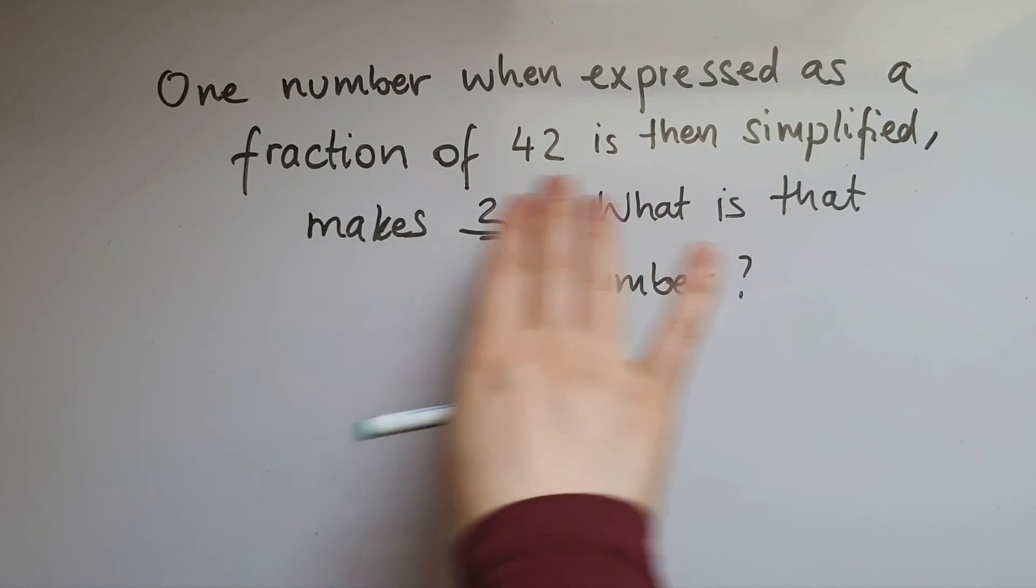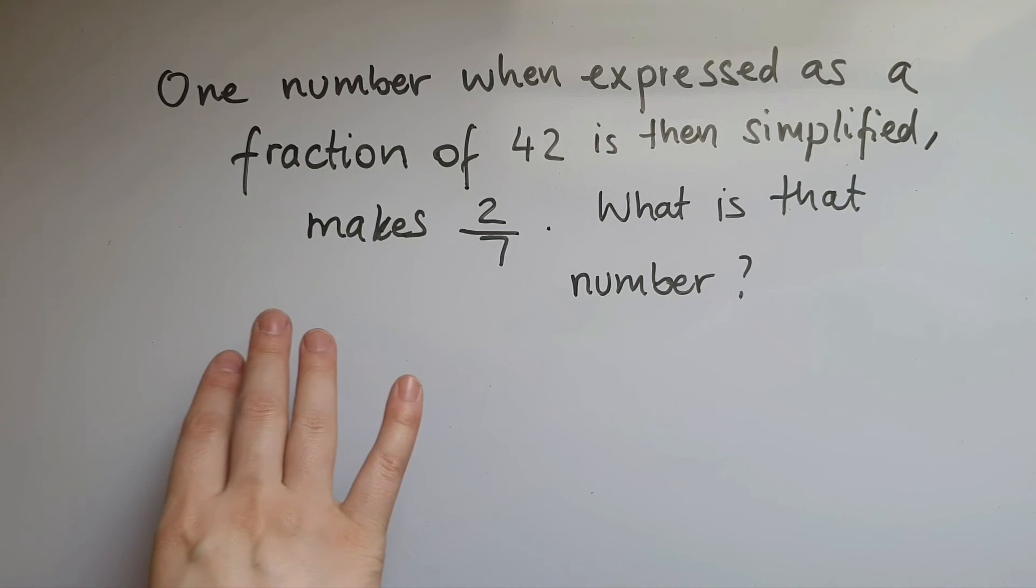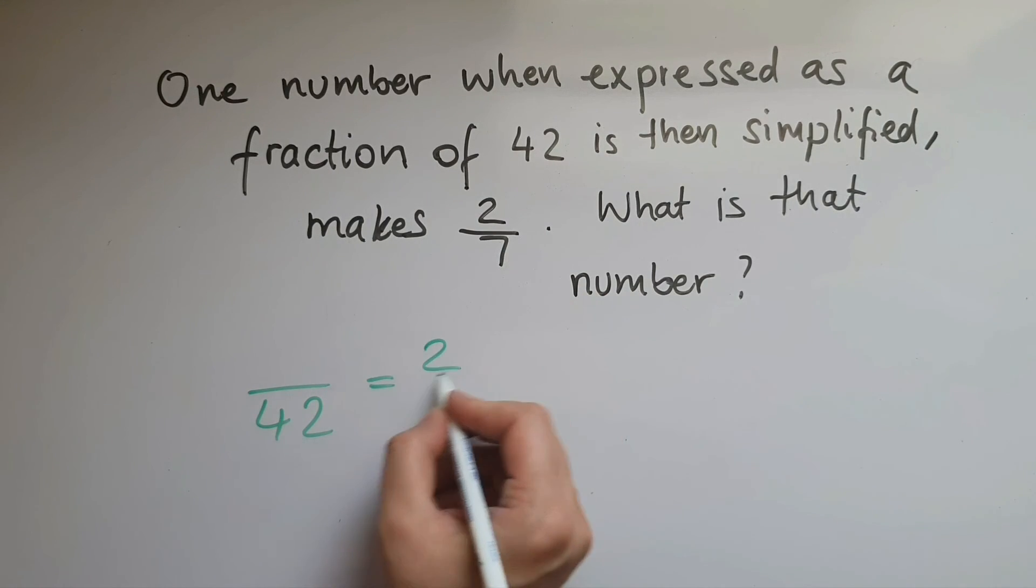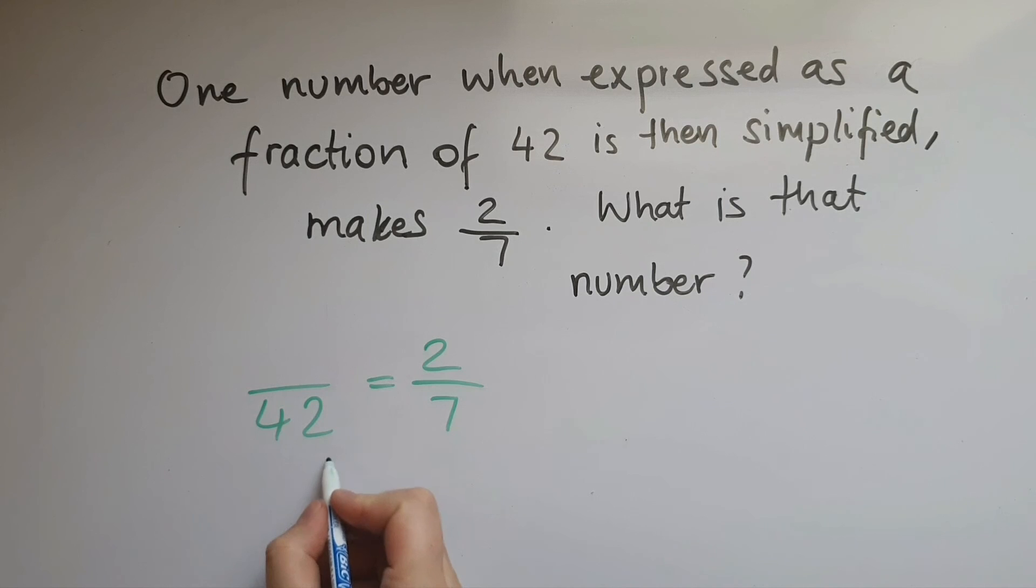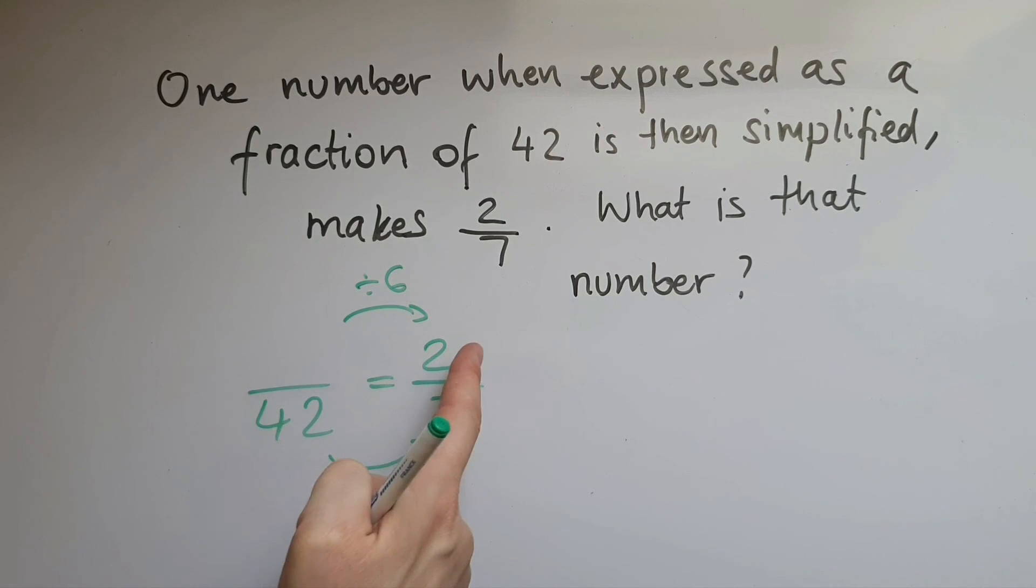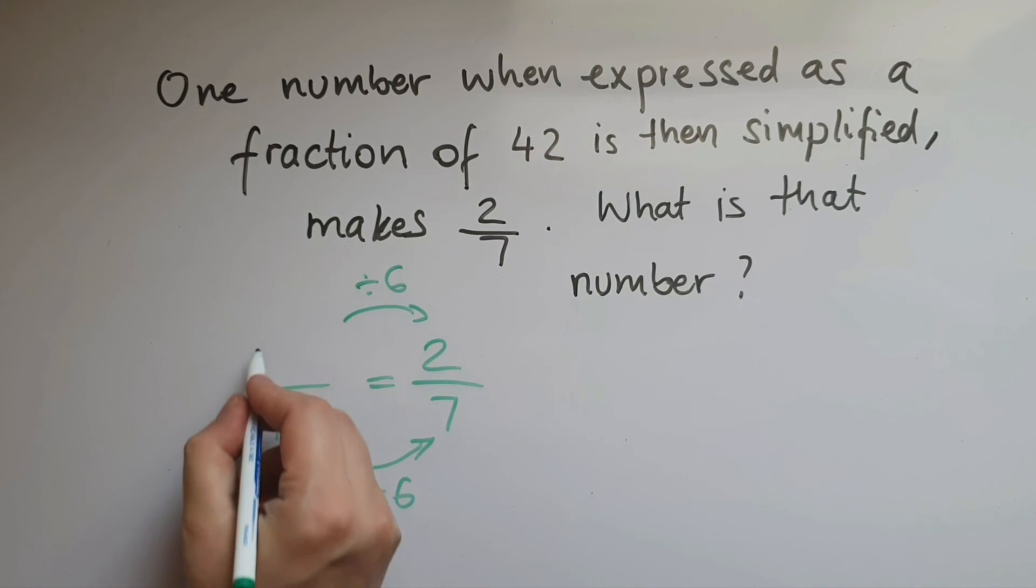So one number when expressed as a fraction of 42 is then simplified, it makes 2/7. So out of 42, what's that number that makes 2/7 when simplified? So 42 to get to 7, we've divided by 6, so we'll do the same over here as well. Now we can reverse the process, 2 times 6, which gives us 12. So the missing number is 12.